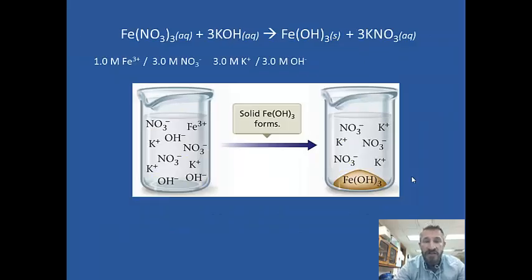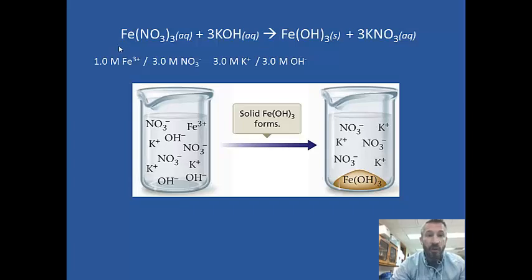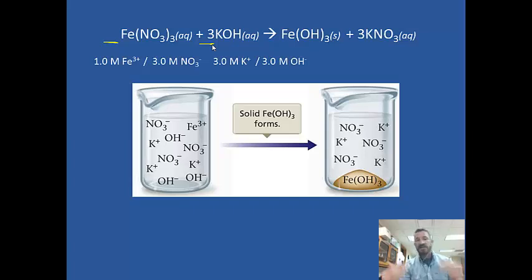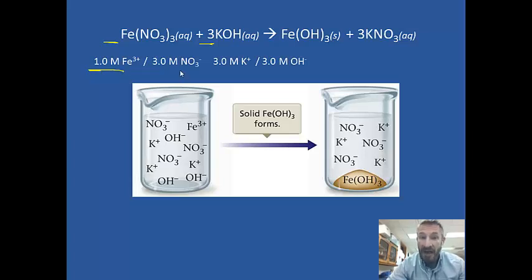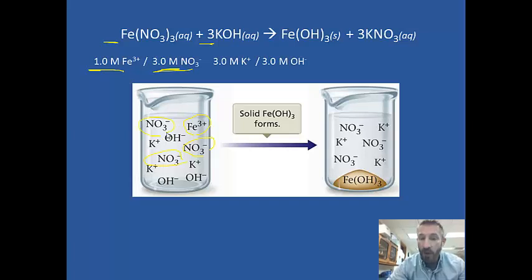Let's do a couple of questions. We have iron(III) nitrate and potassium hydroxide. In the balanced equation, they combine in a ratio of 1 to 3 — there's a 1-to-3 ratio of iron(III) nitrate to potassium hydroxide. If we want a perfect ratio where every single particle reacted and we use 1 molar iron(III) nitrate, the molarity of the nitrate would be 3 times that. In the drawing, there's 1 iron with 3 nitrate ions — so there's a 1-to-3 ratio.